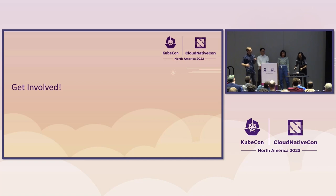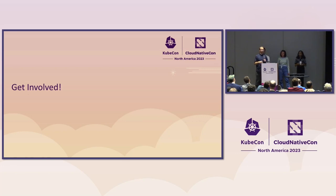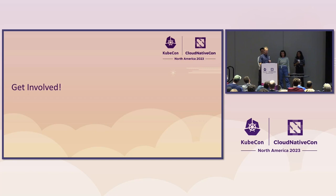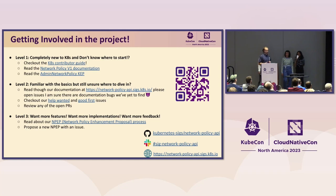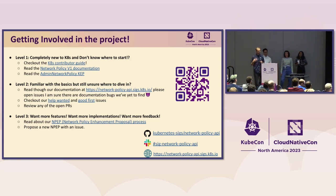Our overarching goal is to consolidate on network policy APIs. Many CNIs in the ecosystem today implement their own sort of global network policy or cluster-scope network policy — we want to bring it back to upstream and make it portable for everyone. We have some really exciting new features coming with the Admin Network Policy API that we didn't talk about today — that will be for another talk. We want to get CNI maintainers involved and work together.